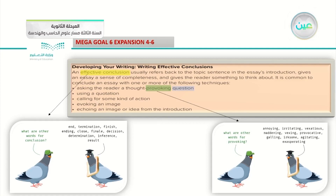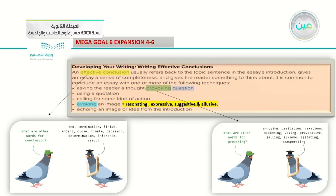Number two: using a quotation. As I said before, a quotation is very important to make your effective conclusion with sense. Don't forget to put quotation marks around the quotation you're using from research in your essay. Number three: calling for some kind of action. You should put some kind of action — you should mention it, give an example, and so on. And number four: evoking an image. Evoking means resonating, expressive, and suggestive — resonating and expressive and suggestive are equal to evoking an image in your essay.